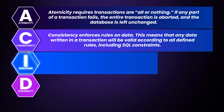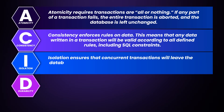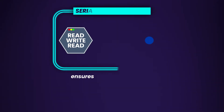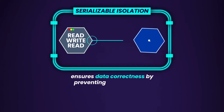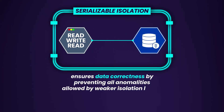The isolation property ensures that concurrent transactions — that is, multiple transactions that happen at the same time — will leave the database in the same state that it would have been in if the transactions were executed serially, or one after another. This is called serializable isolation, and it ensures data correctness by preventing all anomalies allowed by weaker isolation levels.